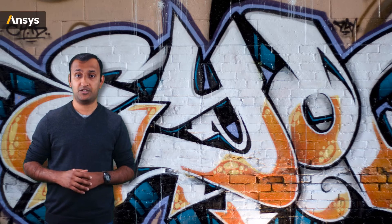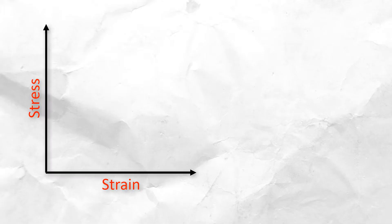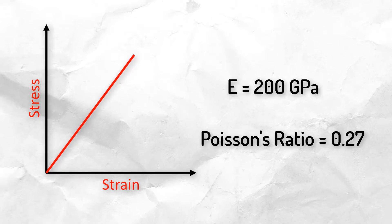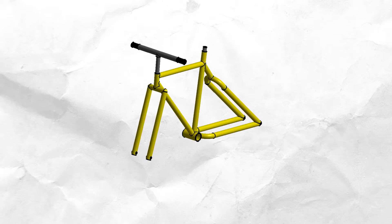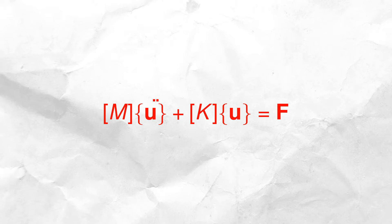In this example, we assume that the bike frame is made of structural steel, so we model it using a linear elastic material model, and here are the material properties. We apply the total weight of the rider at these three locations, and then apply the roller supports at these two locations. Since there are no net accelerations in the part due to these loads, the inertial effects are negligible, so we can perform a static stress analysis.